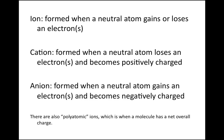Ions are formed when a neutral atom either gains or loses electrons. If a neutral atom loses electrons, it loses negative charge and becomes a positively charged ion, which we call a cation.